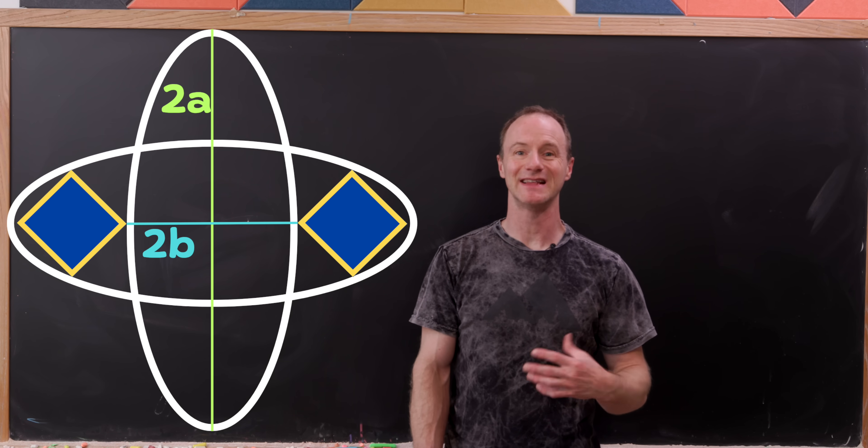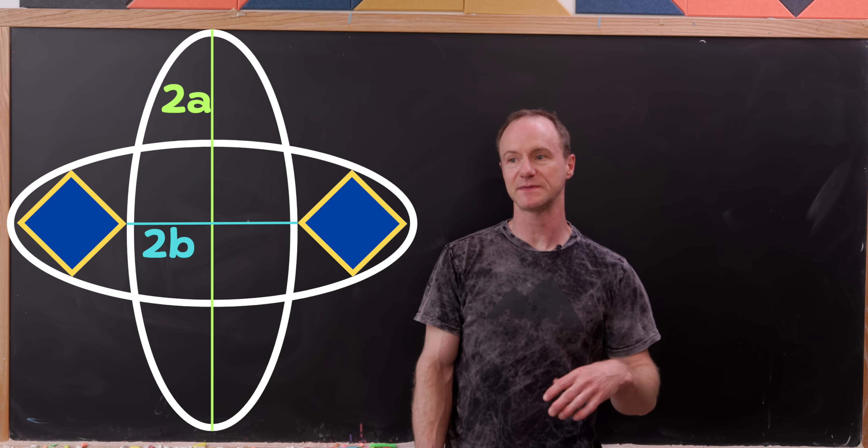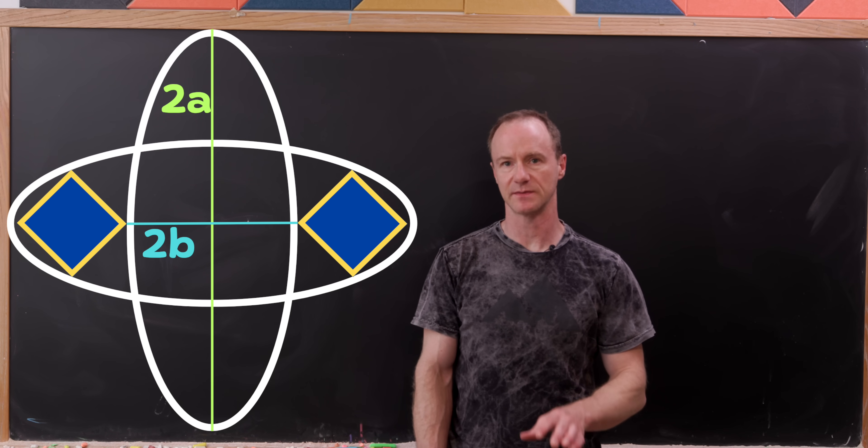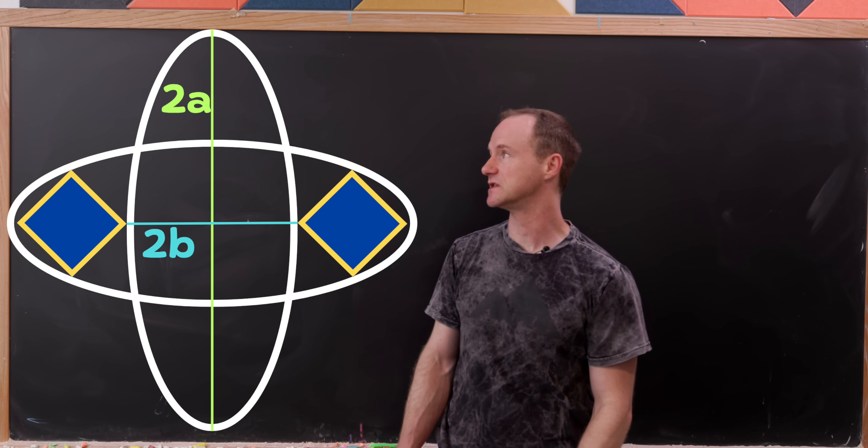Next we're going to inscribe two squares inside one of the ellipses and outside of the other ellipse. Our goal is to find the side length of each of these squares.